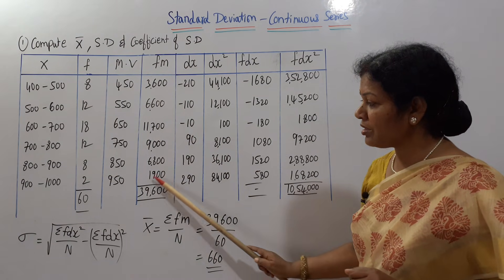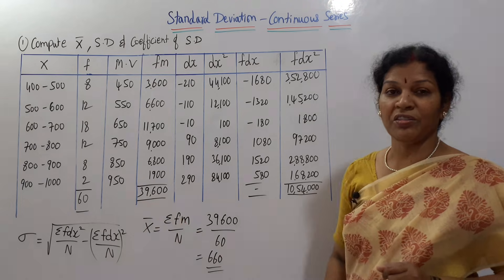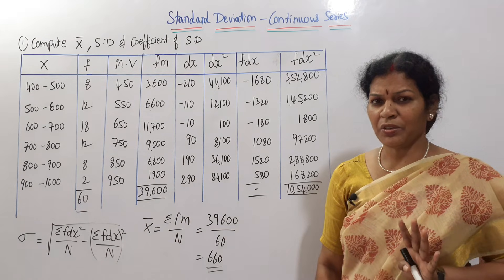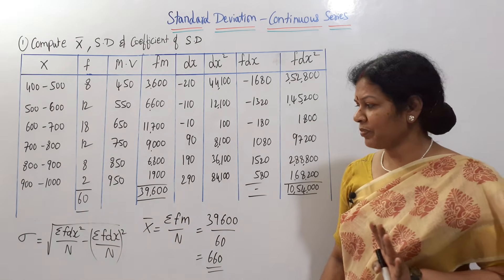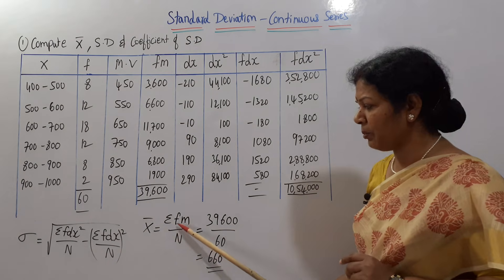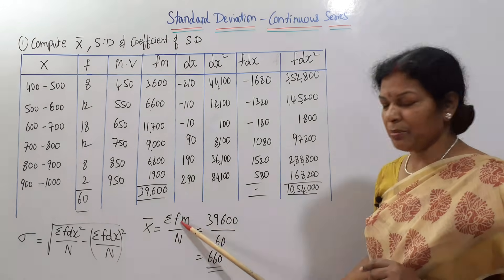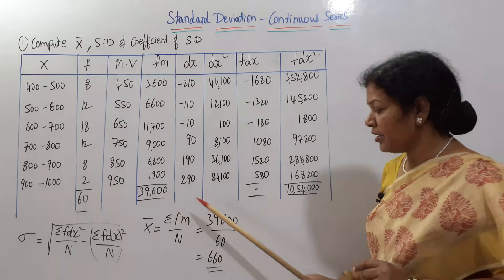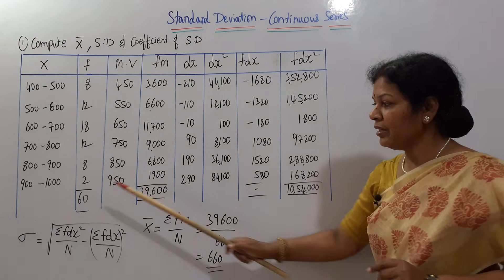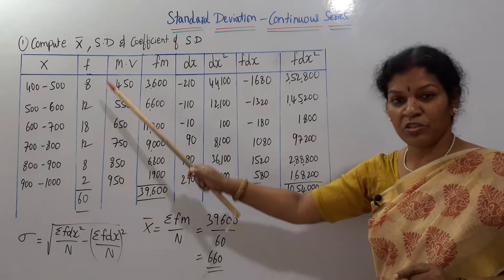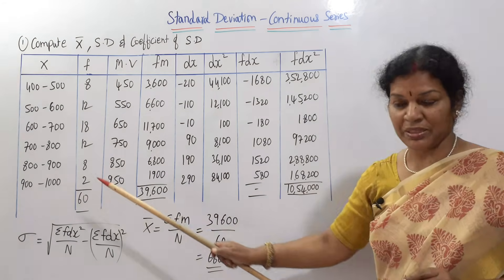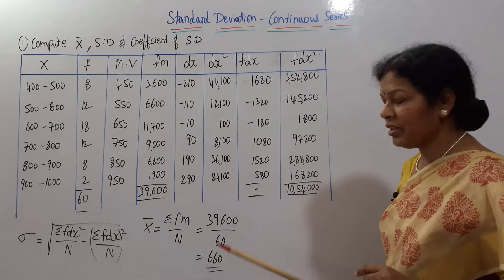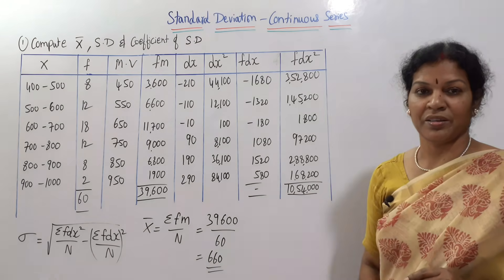The total of fm is 39,600. Once you get sigma fm, apply it in the formula. Sigma fm is 39,600 divided by n, which is the total of the frequencies. So you get x̄ equal to 660.